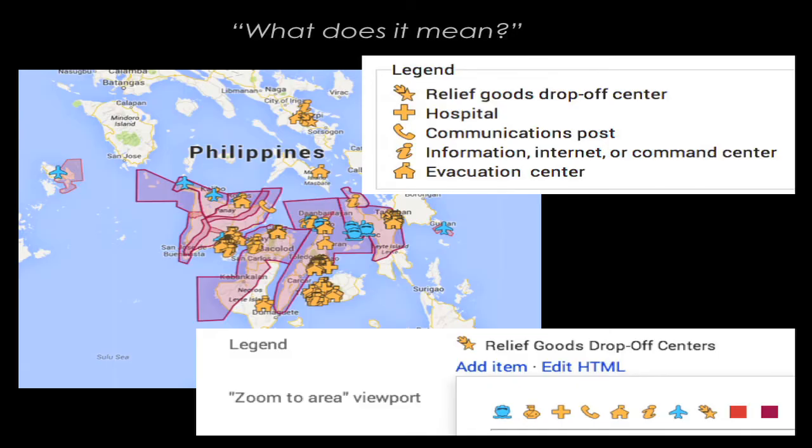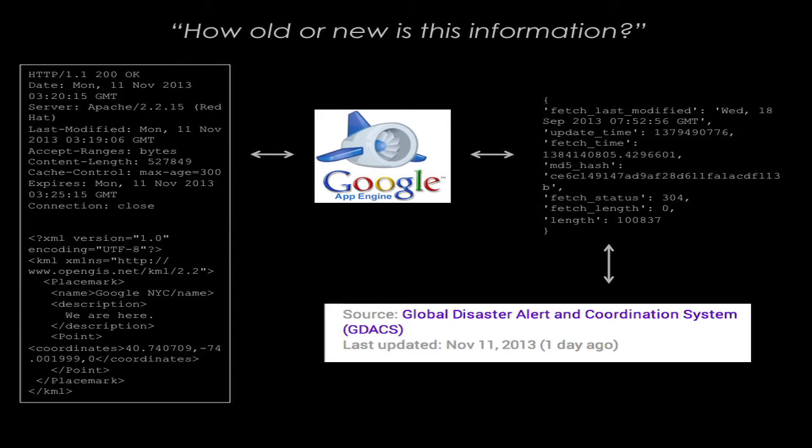We've also added a visual map editor — a legend editor — to the map, to encourage map curators to make and edit legends with HTML. Lack of legend is, in some crises, the number one complaint for people. Timeliness of data is another major issue. No one cares if a road was closed yesterday if it's open today, or if there was water somewhere yesterday but not today. For some layer types, we can automate this to show a last update time on our map.